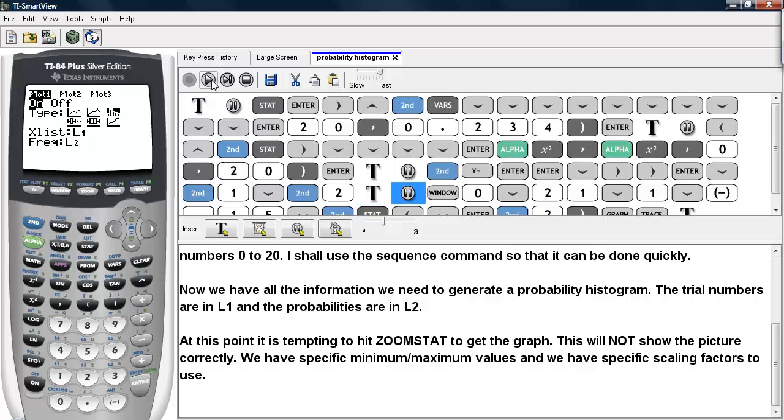Now at this point, it may be tempting to hit ZOOM STAT to get the graph, but this will not show the picture correctly. We have very specific minimum and maximum values that we're going to use, and specific scaling factors as well. So we're going to hit WINDOW and enter in these values.